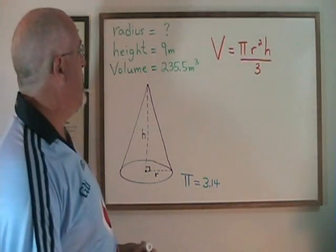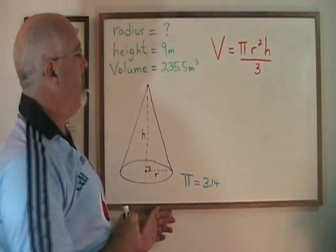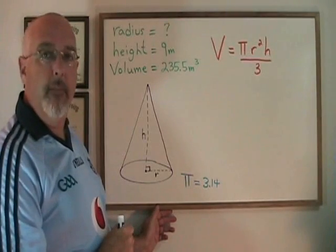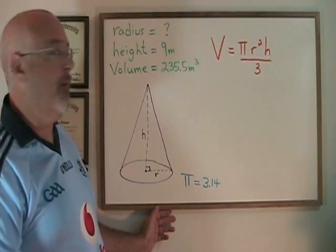In the next example, we are looking for the radius. The height is 9 meters. The volume is 235.5 meters cubed. And again, we are going to use pi equal to 3.14.